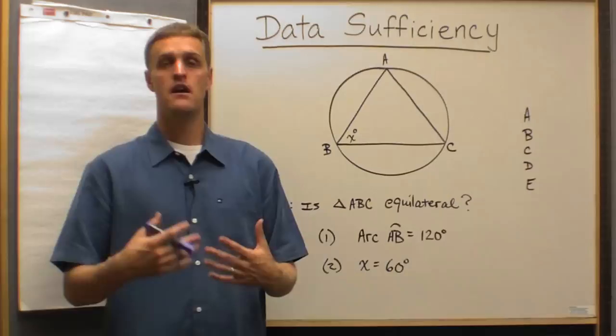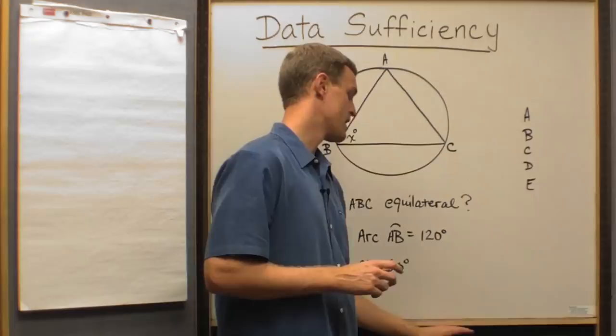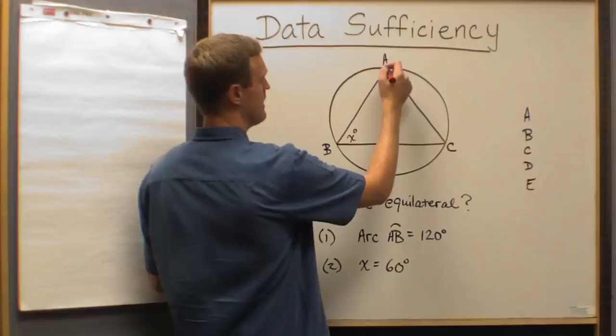Now you may not know that. I'm going to teach circles in a future video. When we go over geometry, I'll teach you all the circle rules. Let me teach you a couple of circle rules here because it's important to understand. Statement number one is telling us that arc AB equals 120 degrees, minor arc AB specifically.